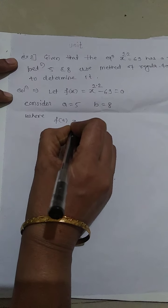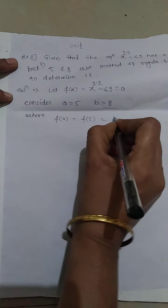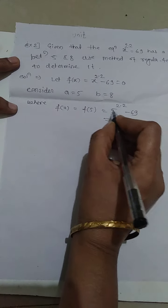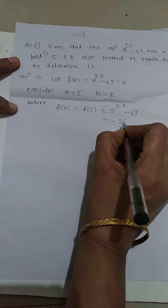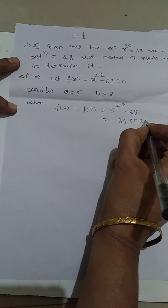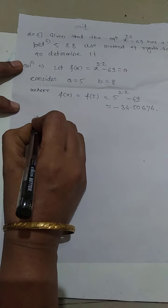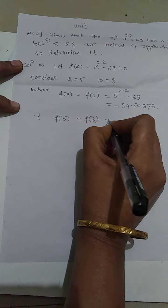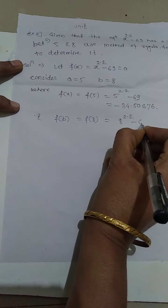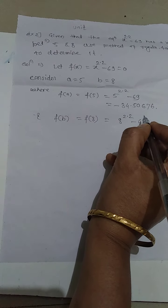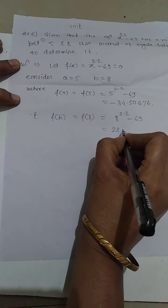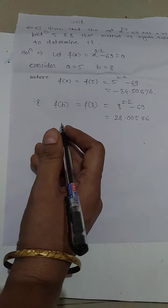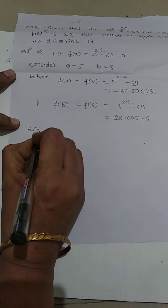f(a) = f(5) = 5^2.2 − 69 = −34.50676. Then find f(b): f(8) = 8^2.2 − 69 = 28.00586. Here we see that f(a) and f(b) have opposite signs.